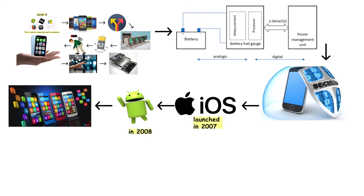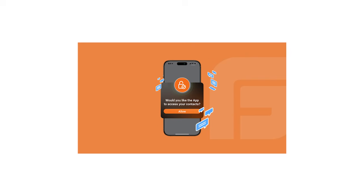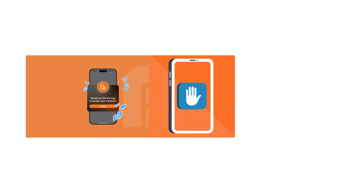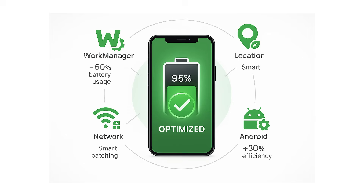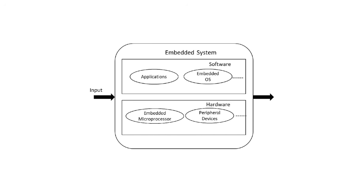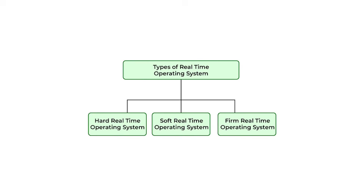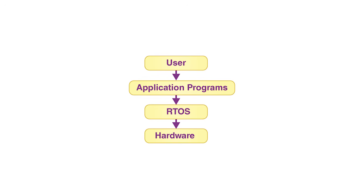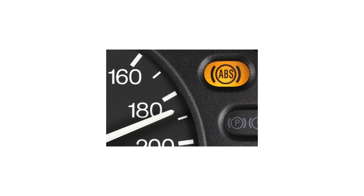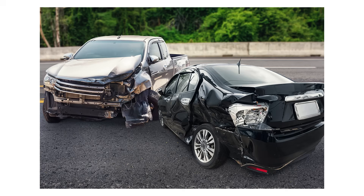These systems introduced touch-first interfaces with gestures like swipe, pinch, and tap. Apps were sandboxed for security, meaning each app runs in isolation and can't access another app's data without permission. Background task management is aggressive, killing apps to save battery. Embedded operating systems power everything from smart thermostats to car computers to industrial machinery. Real-time operating systems (RTOS) guarantee tasks execute within precise time windows — if your car's anti-lock brakes run on an RTOS, the system guarantees the braking calculation completes in microseconds every single time, or people die.